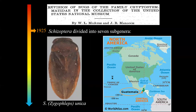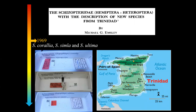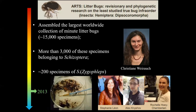Zygoflaps was described by Mechitin and Malachi in 1925, just based on a single male from Guatemala called Schizoptera unica. After that, only in 1969, Emsley described three additional species — Schizoptera queralia, Simla, and Ultima — from Trinidad. After that, nothing more was described for this group for over 60 years. Then in 2013, Christiana and some collaborators started the Litterbugs project, assembling the largest worldwide collection of minute litter bugs with more than 50,000 specimens, more than 3,000 of which belong to the genus Schizoptera, and about 200 specimens of Zygoflaps.